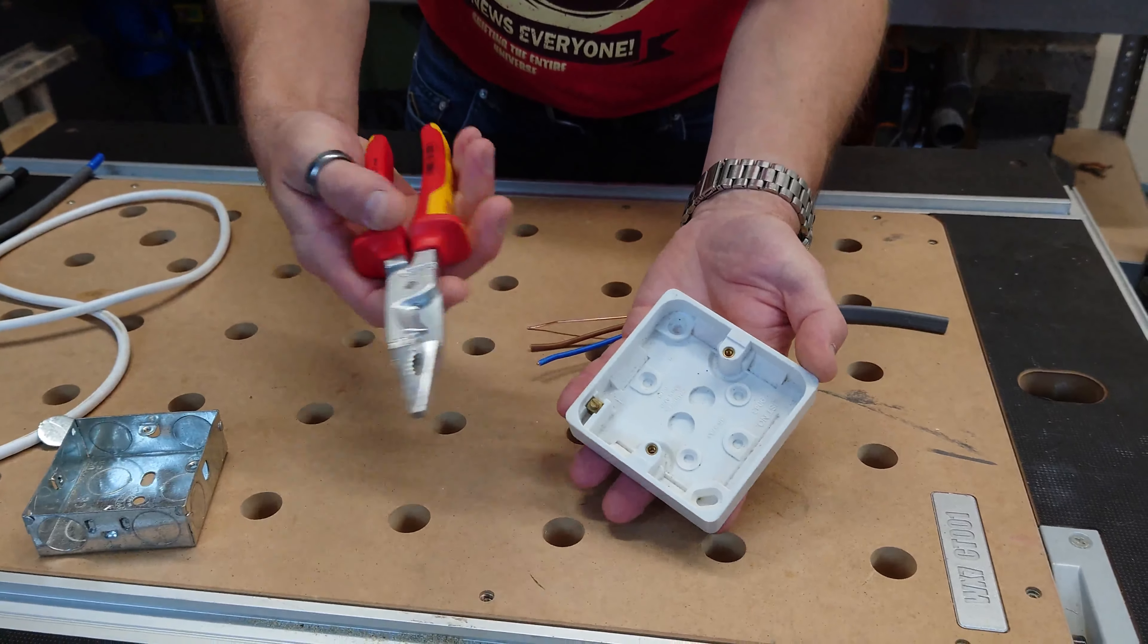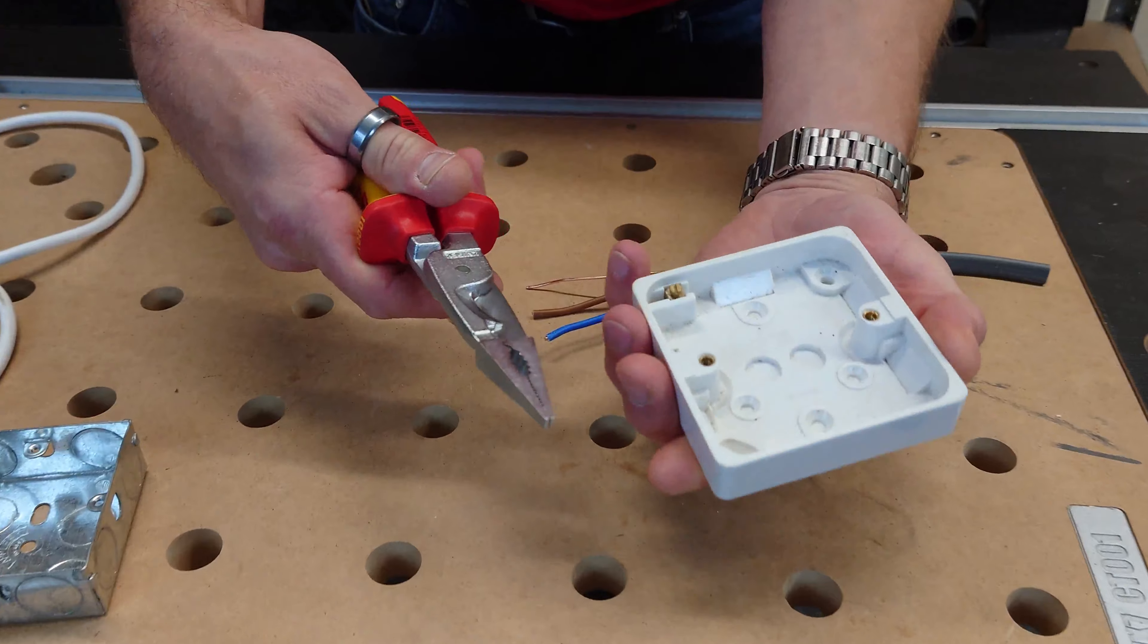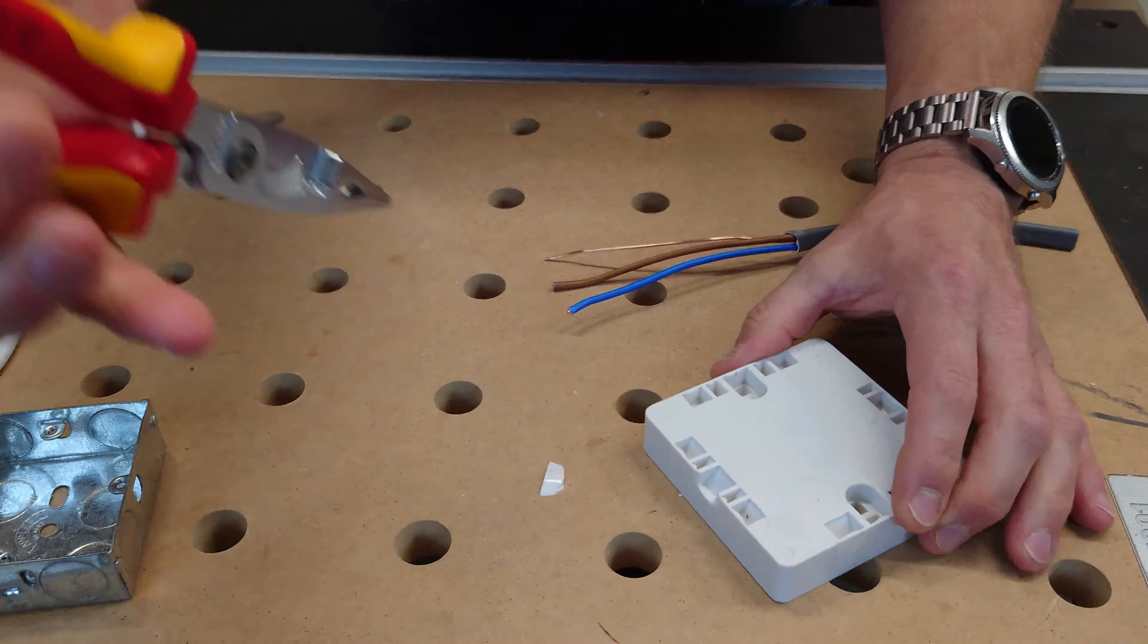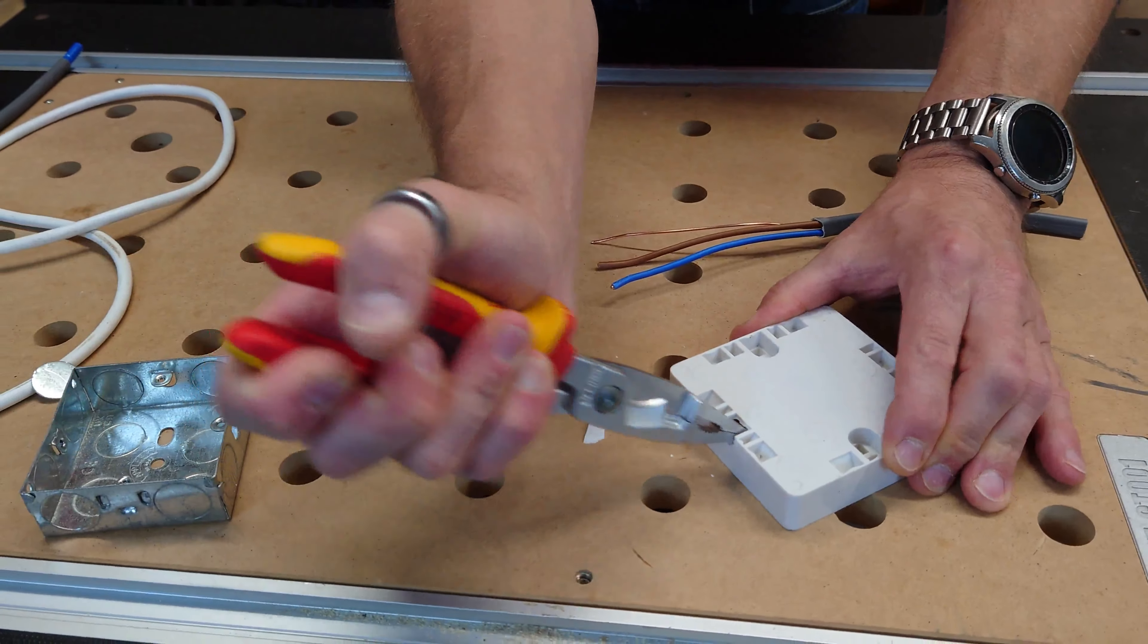Plastic back boxes, similar thing, because it's nice and flat, nice and big, doing your knockouts is really simple. Just pulls it straight out, straight through there.